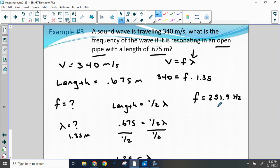So as a matter of review, we've already done problems like this, where we want to find something in our velocity equals frequency times wavelength problem. In this case, we were trying to find the frequency. In order to find the frequency, we needed velocity and wavelength. They didn't give us the wavelength, but we knew that there was a pipe with a length of 0.675 meters.